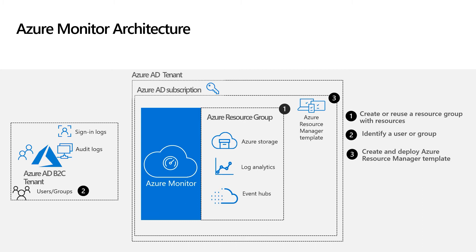In the third step, you will perform the resource delegation by creating and deploying an Azure Resource Manager template, or ARM template in short. The detailed instructions about how to create and deploy this ARM template are available in the article provided within the description of this video. Essentially, the ARM template includes information like Azure AD B2C tenant ID, resource group name, user or group object ID, etc. Once you have the ARM template ready, you deploy it as a subscription level deployment. Because this is a subscription level deployment, it cannot be initiated in the Azure portal, but instead you deploy it using the Azure PowerShell module or through the Azure CLI.